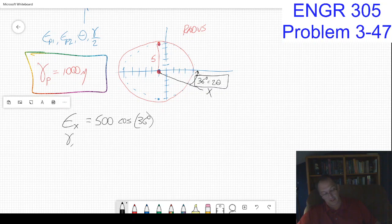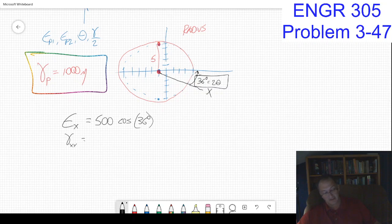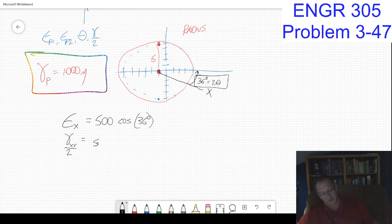And if I want to figure out the shear strain in the xy, the shear strain over two is equal to 500 sine of 36 degrees. Let me go grab my phone, we'll do some calculations and start putting the answers in.